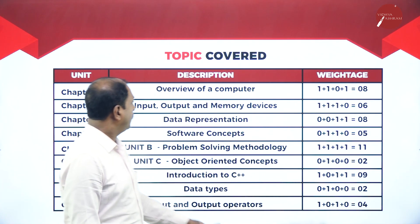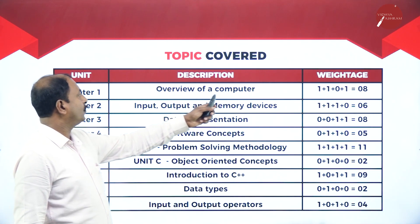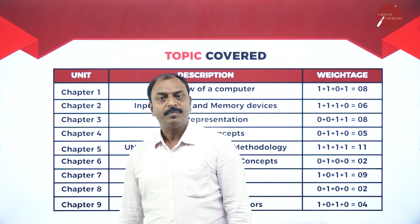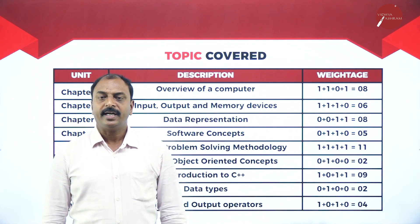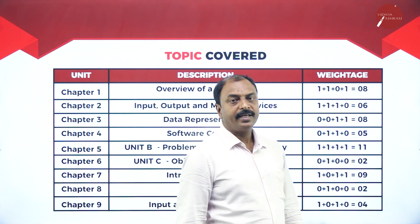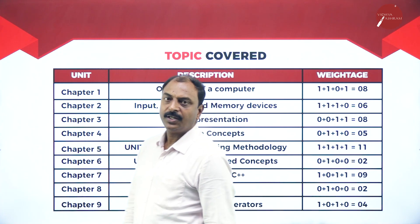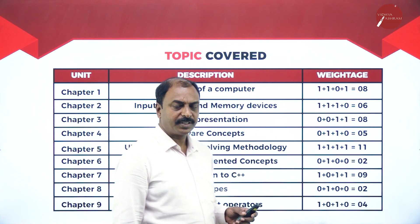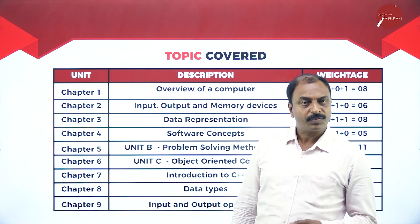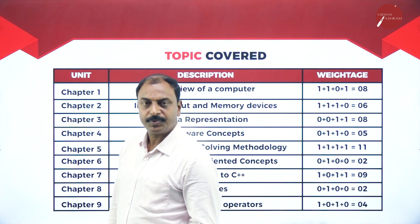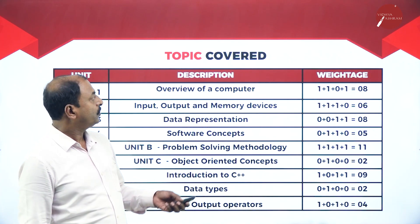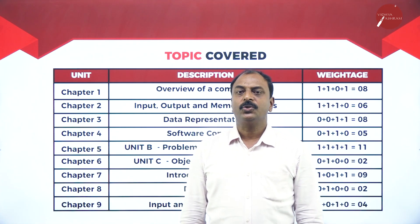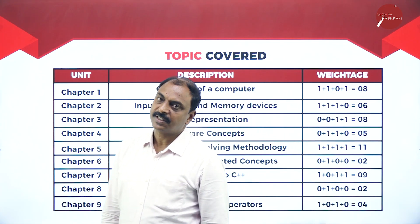Chapter one is 'Overview of Computer System.' In this chapter we are going to learn the basic definition of computer system, different parts of computer system, what is data, what is processing, what is information, and the data processing cycle. Along with that we are going to learn different classifications of computers, the history of computers, and generations of computers.